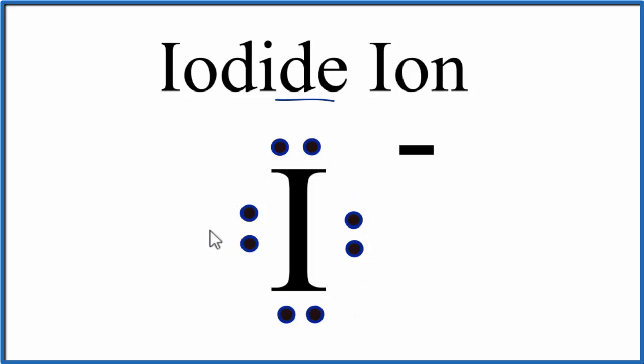And that means that it's very stable. That's why it gains that extra electron and becomes minus, the iodide ion.